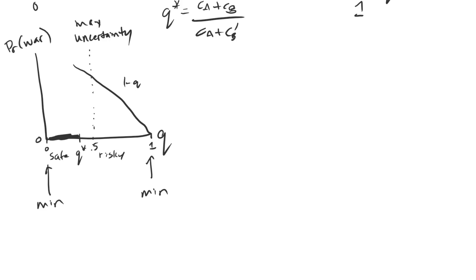Likewise, Q equal to zero means A knows for sure that B has low costs — 0% probability of high costs, 100% probability of low costs. Again, it's a situation with complete information. If 0 and 1 minimize uncertainty, then 0.5 should maximize it. As a technical side note, the type distribution here is a Bernoulli distribution, and the variance of a Bernoulli distribution maximizes at 0.5 — so there's a technical reason to think of 0.5 as maximizing uncertainty. But you don't need to know Bernoulli distributions to appreciate what's going on.